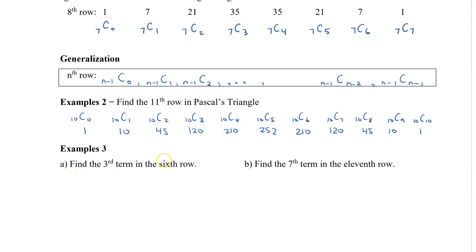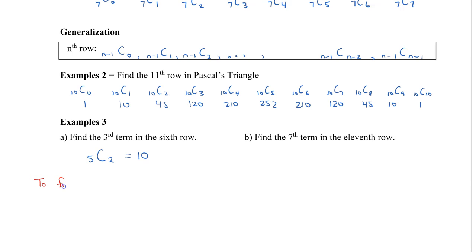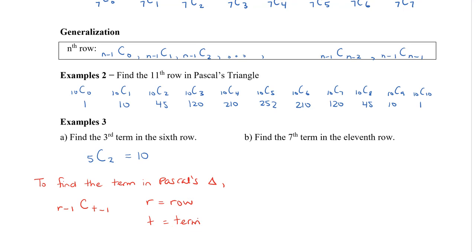Now, instead of listing the whole row, how do you find a specific term? For example, find the third term in the sixth row. Notice the first term corresponds to r=0, the second to r=1, and the third to r=2. The sixth row means we use 5 as our base (row minus 1), and the third term means we choose 2 (term minus 1), giving us 5C2 = 10. In general, to find a specific term in Pascal's triangle, use the formula (R−1) C (T−1), where R is the row number and T is the term position.